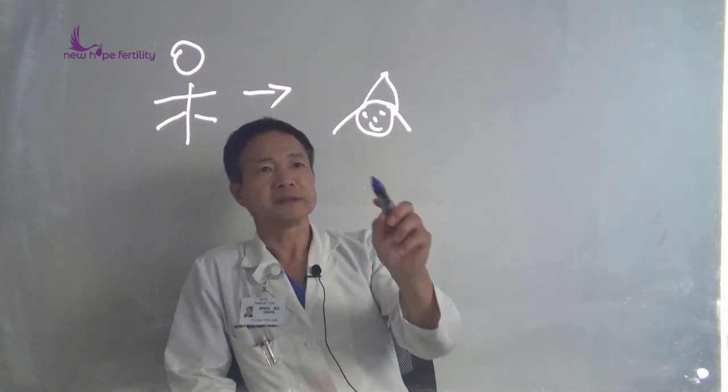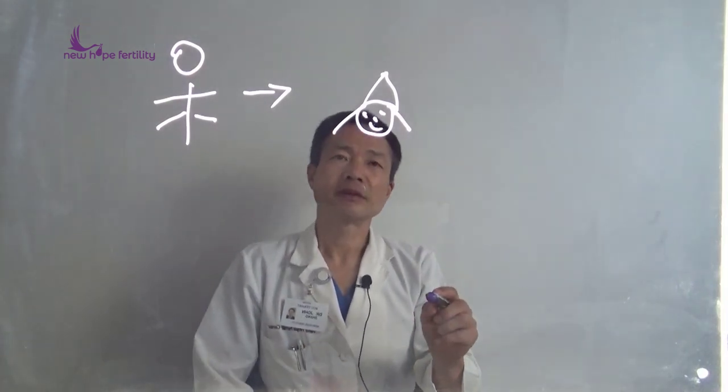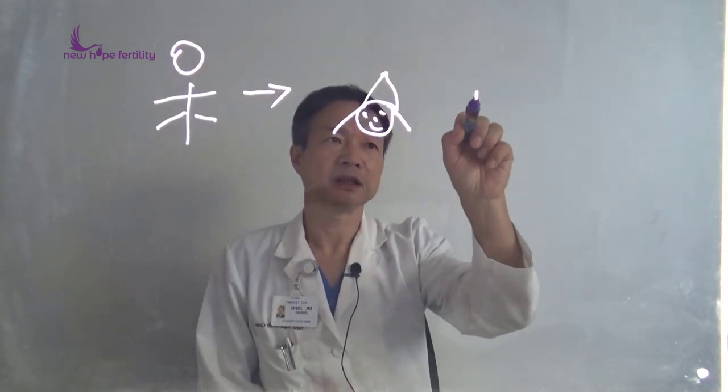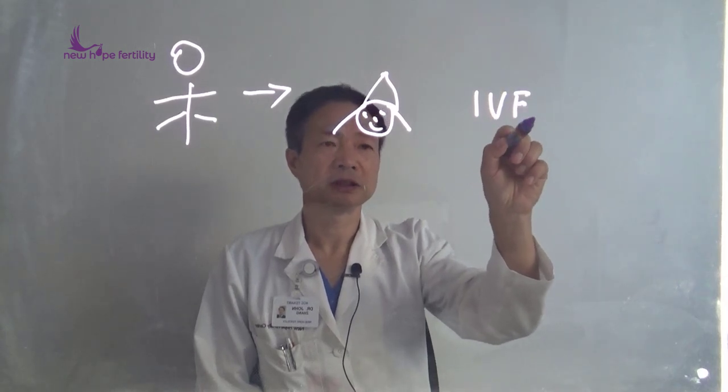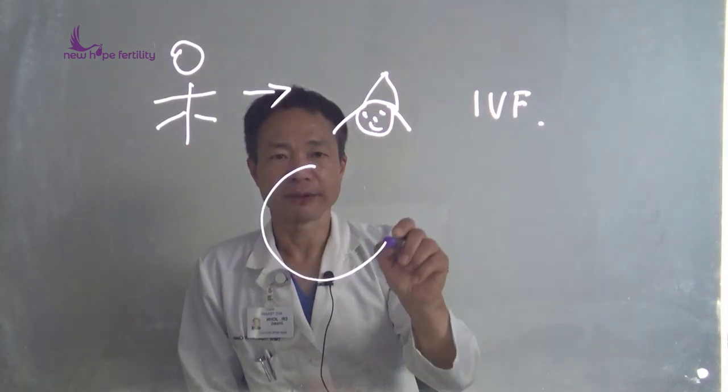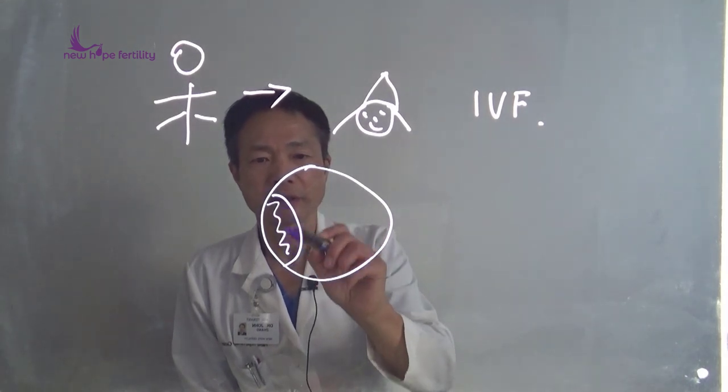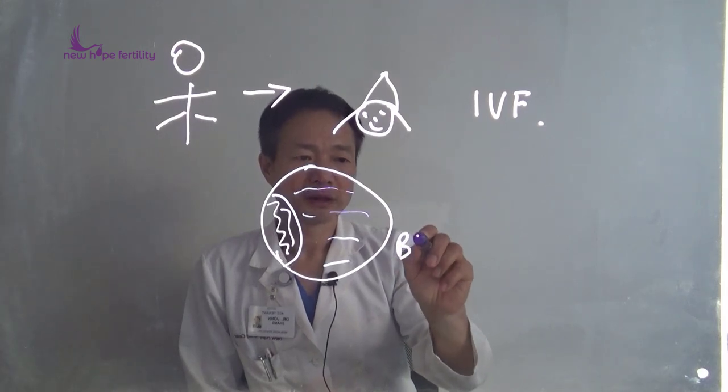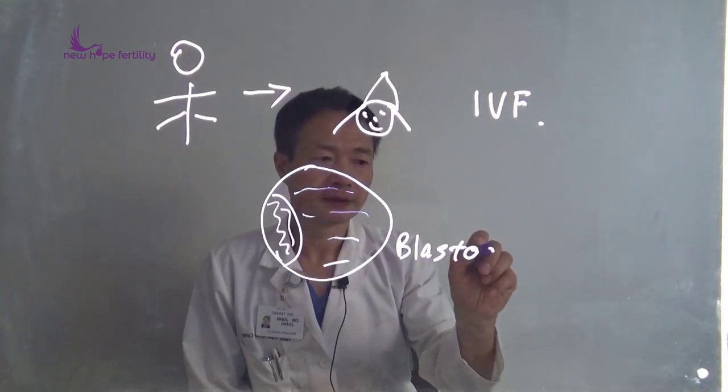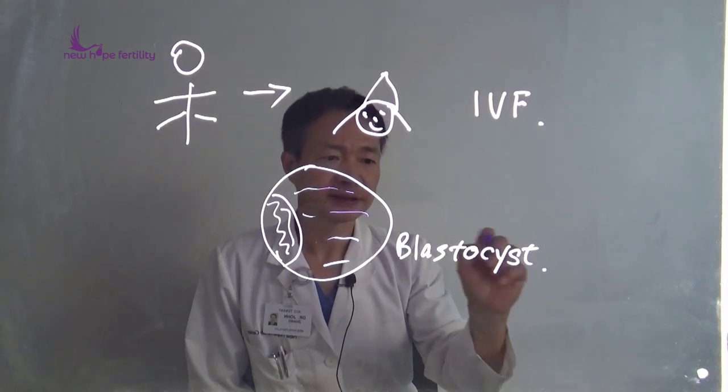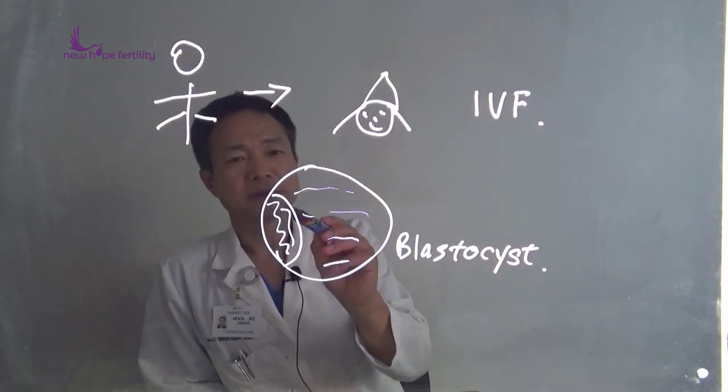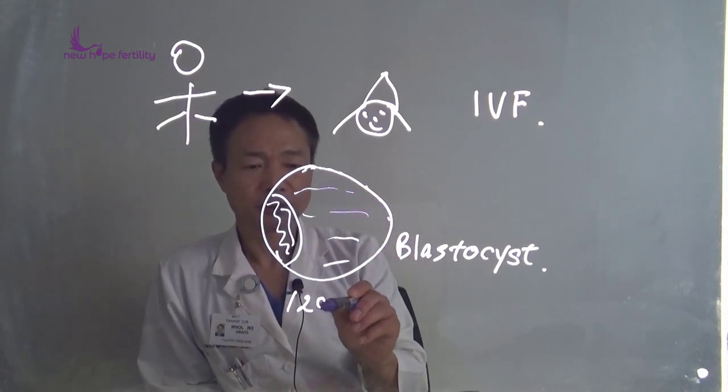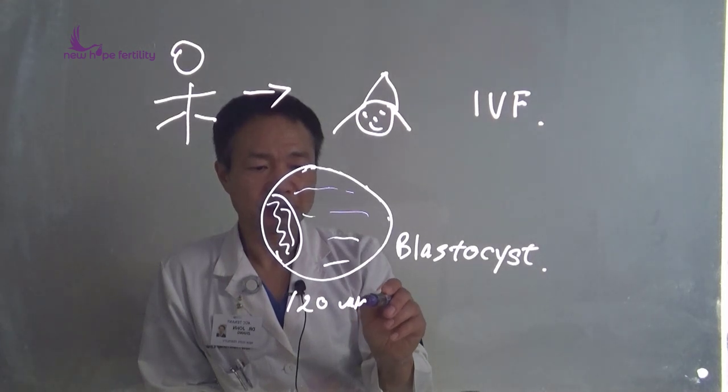So that depends on several determining factors. But the main determining factor in case of in vitro fertilization is the quality of the embryo. This is called blastocyst stage embryo. So if the embryo expanded around 120 micrometers in diameter, this may be a good quality embryo.